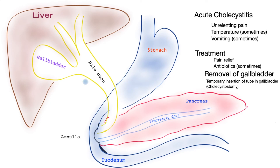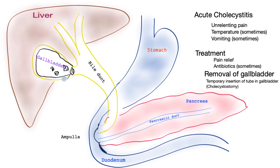Cholecystitis is a complication of the gallbladder where a stone blocks the exit. The difference between acute cholecystitis and biliary colic is that the stone does not move. This one stone causes an obstruction and does not move for some time, causing the thickness of the gallbladder wall to increase so that it becomes quite red and inflamed, and the fluid inside gets inflamed and sometimes infected.